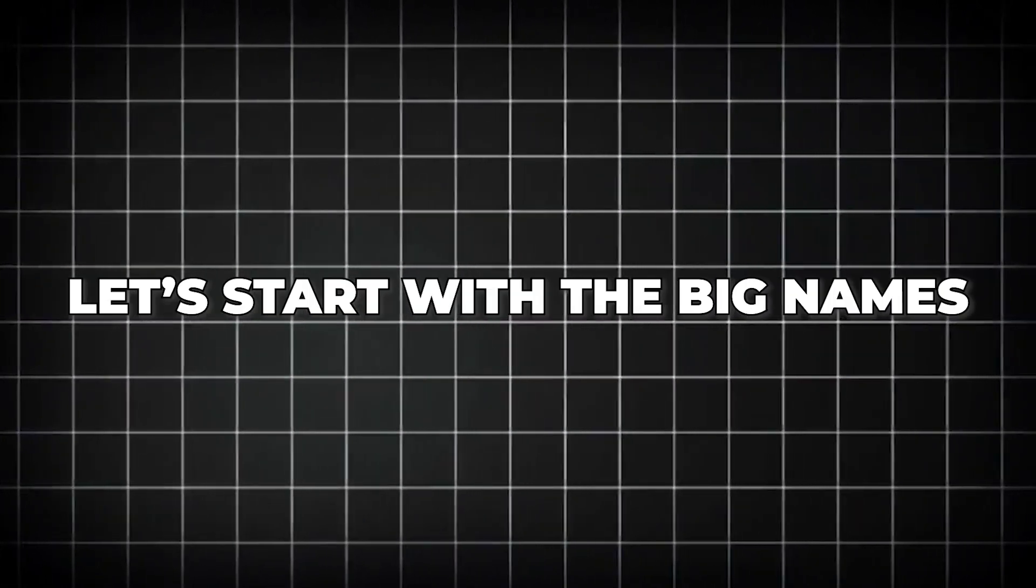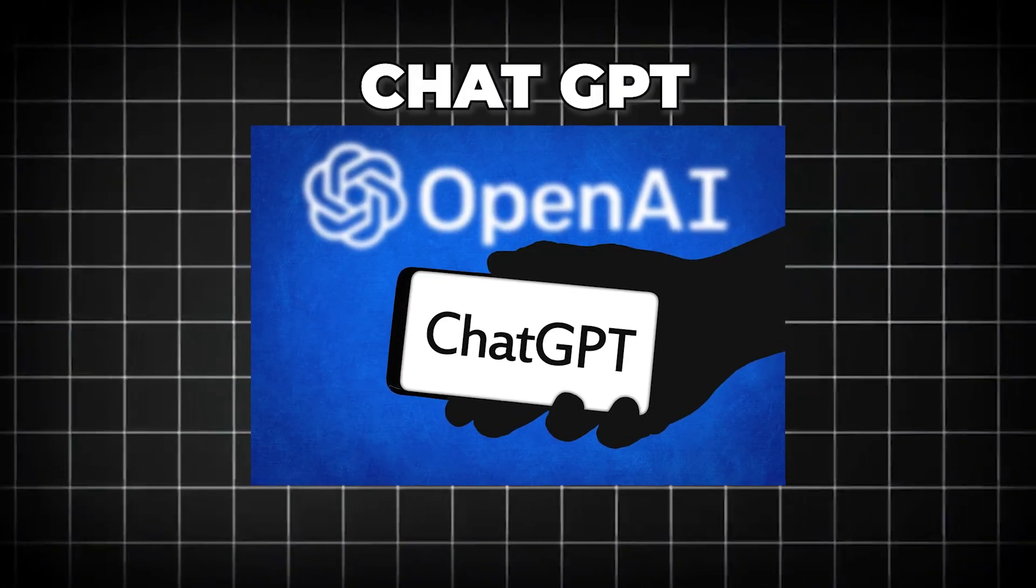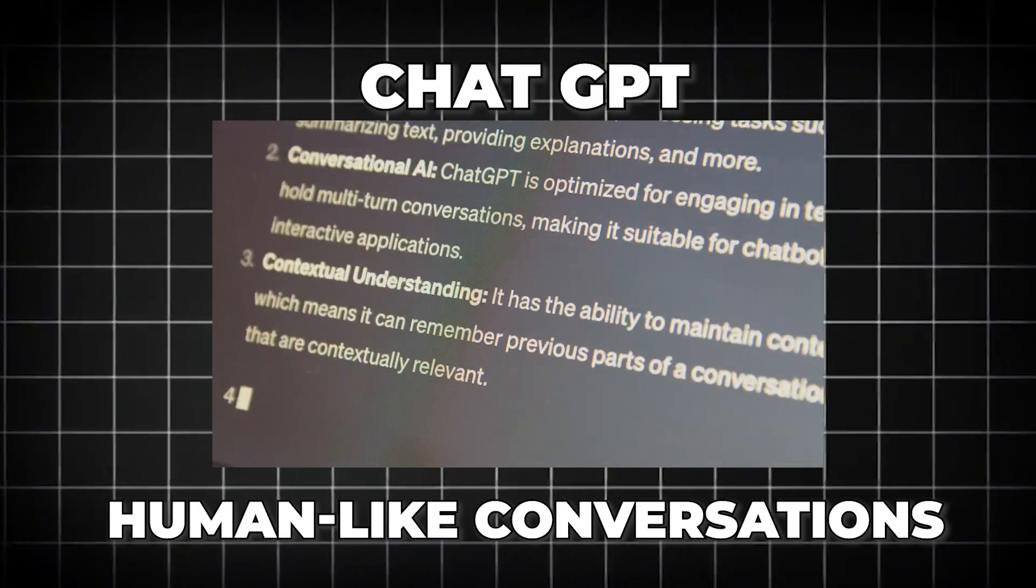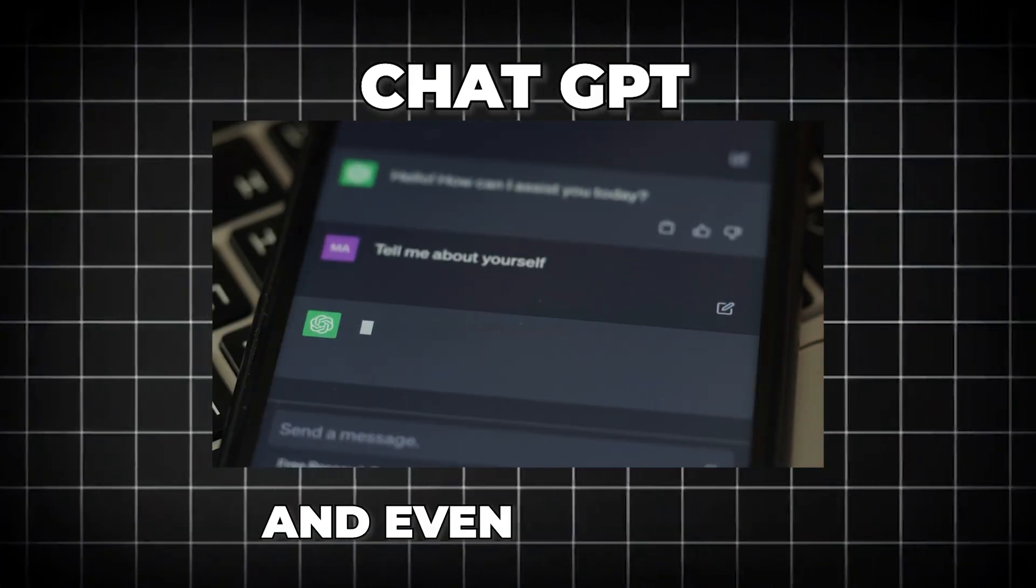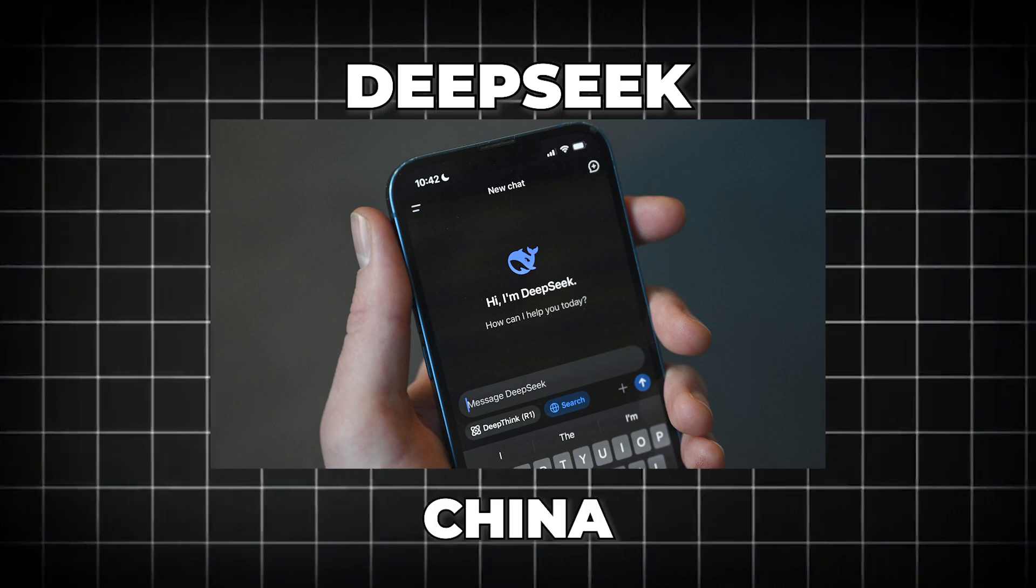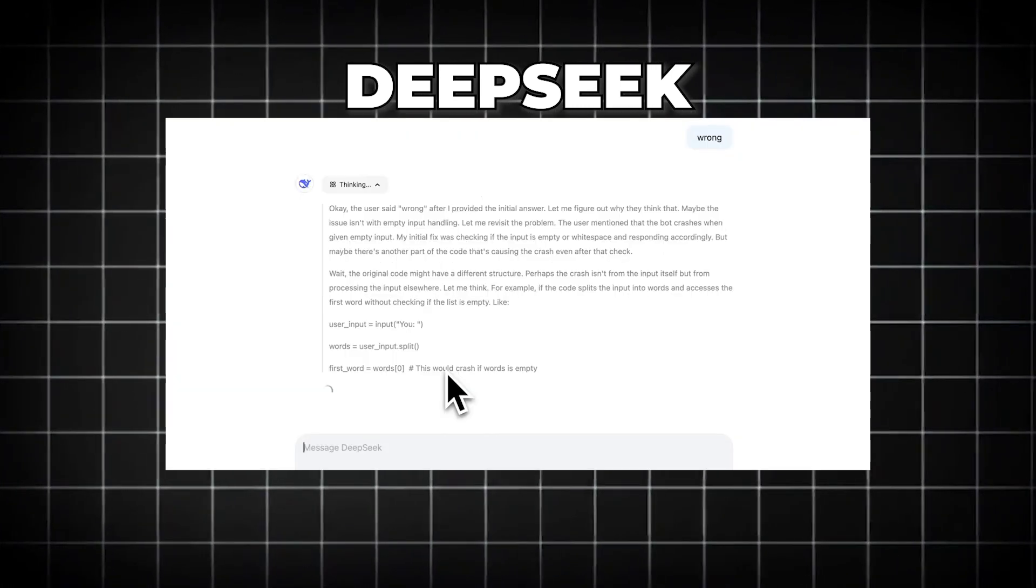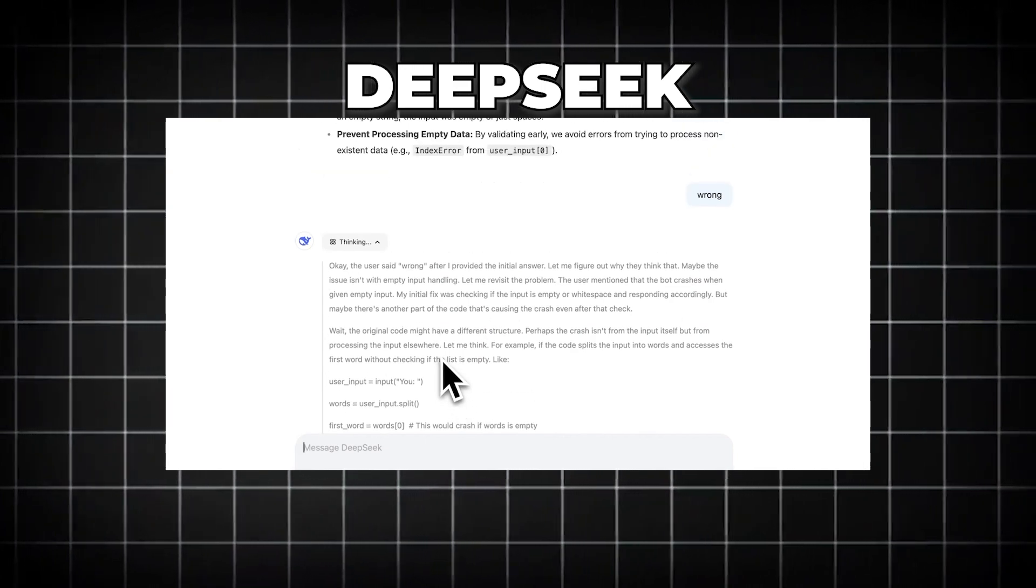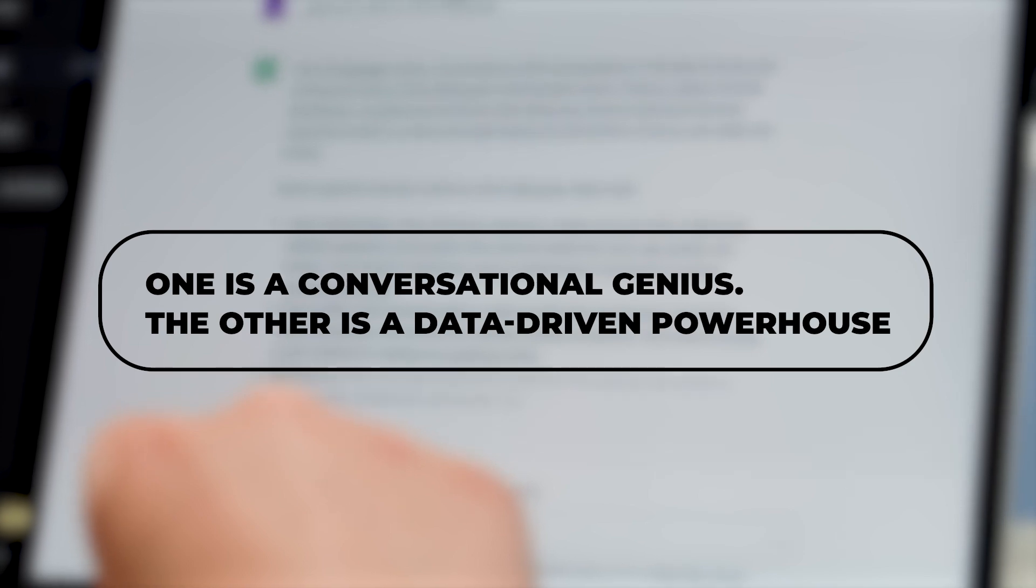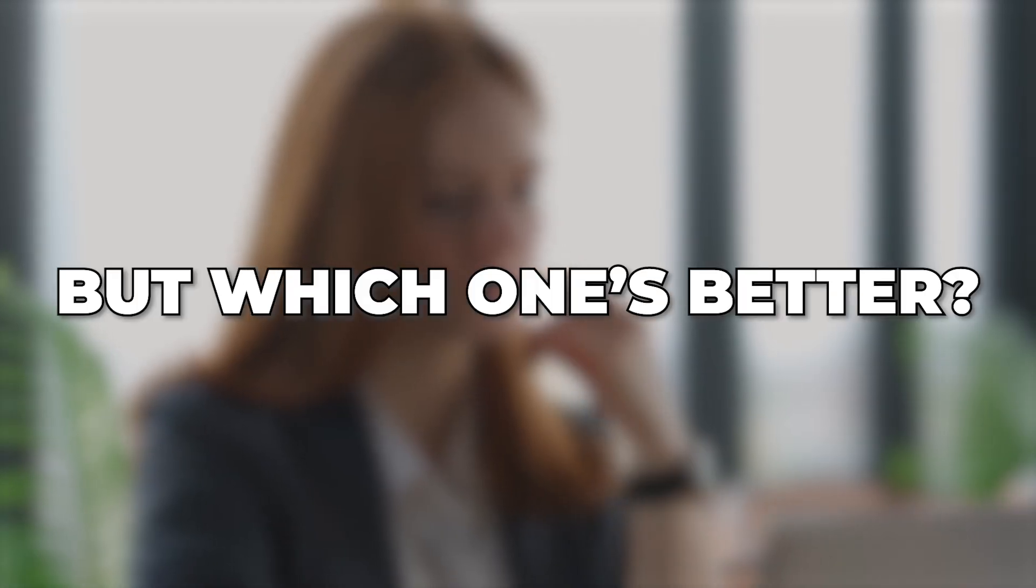Let's start with the big names. ChatGPT, created by OpenAI, is the go-to for human-like conversations, storytelling, brainstorming, and even tutoring. DeepSeek is a newer player from China, making waves in technical problem-solving, efficiency, and research-driven tasks. So one is a conversational genius and the other is a data-driven powerhouse. But which one's better?